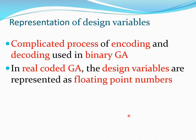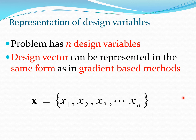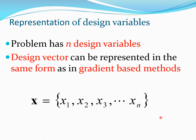We also saw that the process of encoding and decoding variables in binary GA is quite cumbersome and complicated. You need to continuously move between bit strings and real number variables, which requires additional coding functions. In real coded GA we bypass this problem entirely, as the design variables are represented directly as floating point numbers.